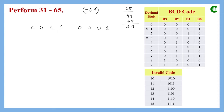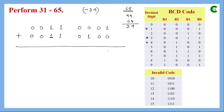We perform the normal BCD addition and check the result for validity. We find 0101 (equivalent to 5, valid) and 0110 (equivalent to 6, valid). So the result obtained so far is valid. We also notice there is no carry in this result.